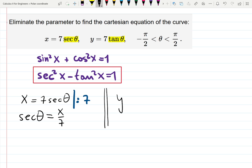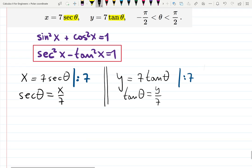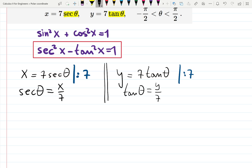If y is 7 tangent theta, then tangent theta is y over 7. I just divided by 7, this second equation. Then, let's plug into the identity number 2, which I already showed.